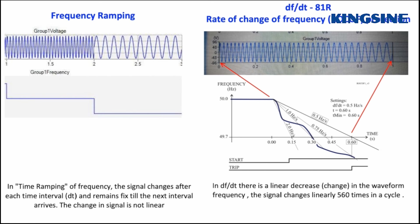As we can see, in both frequency ramping and DF by DT, the frequency of voltage signal is changing with respect to time. The only difference is that in frequency ramping the rate of change is not linear. The signal changes after fixed time interval and remains constant till the next time interval.